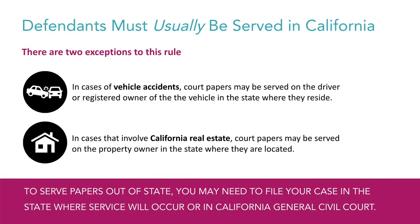Second, small claims rules of service require that court papers be served in the state of California. There are only two exceptions to this rule. If you were involved in a vehicle accident, court papers may be served to the driver or registered owner in the state where they reside. Also, if you are involved in a dispute concerning California real estate, court papers may be served to the property owner in the state where they are located. If you need to serve court papers on someone out of state and don't fall under one of these exceptions, you'll need to file your claim either in the state where the defendant will be served or in California General Civil Court.